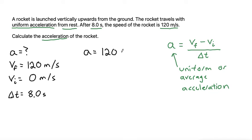We can plug in final velocity is 120 minus initial velocity is 0. Divide that by our change in time, which is 8.0. Subtracting first, 120 minus 0 is just 120. Divide that by 8.